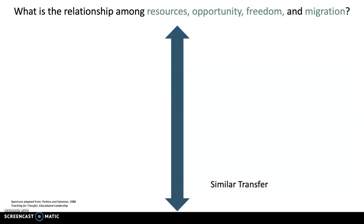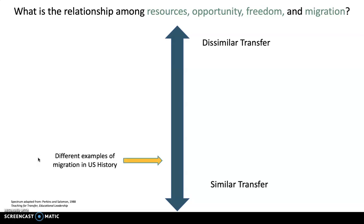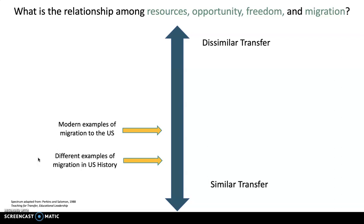For social studies, I might look at the relationship among resources, opportunity, freedom, and migration. I want to start with similar transfer and increase dissimilarity over time. I might start with different examples of migration in U.S. history — transfer from one U.S. history situation to another, very similar transfer. Then I'd go to modern examples of migration to the U.S., which is more dissimilar because it's today, not history. Then I might look at the Aral Sea drying up in Central Asia, where all of those concepts play an important role.